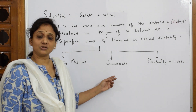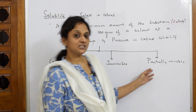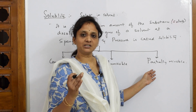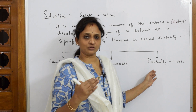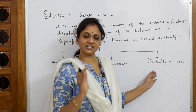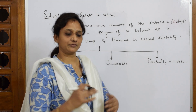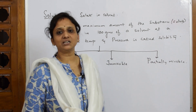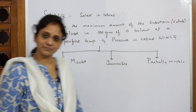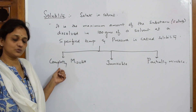If the solute is not soluble in the solvent, I call it immiscible. If the solute is soluble only up to a limited temperature and concentration — only under limited conditions — then I call it partially miscible. Beyond that limit, if you change the temperature or pressure, the miscibility disappears and they form two separate layers.